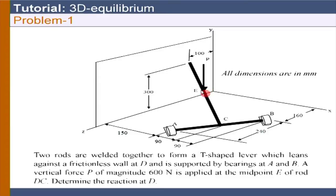Determine the reaction at D. D is the point where this rod is leaning against the wall. We are interested in finding out the reaction at D, which is the point of contact with the wall.